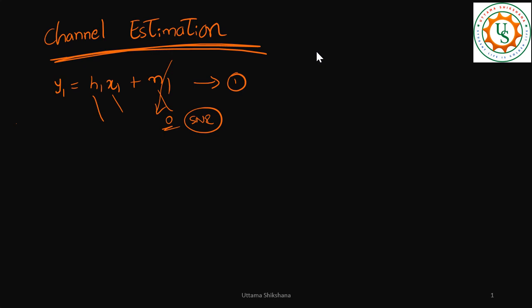For now you can think that there are two unknowns here. Then how to estimate my channel h1? Definitely in that case we should be knowing this x1. That is when we say that this x1 should be known to both transmitter and receiver and this will become as a pilot or known sequence or reference sequence.